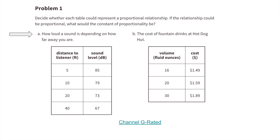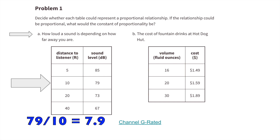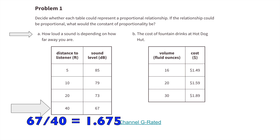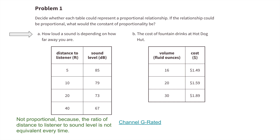A. How loud a sound is, depending on how far away you are. This is a ratio of 5 to 85, a ratio of 10 to 79, a ratio of 20 to 73, and a ratio of 40 to 67. These are not proportional because the ratio of distance to listener to sound level is not equivalent every time.